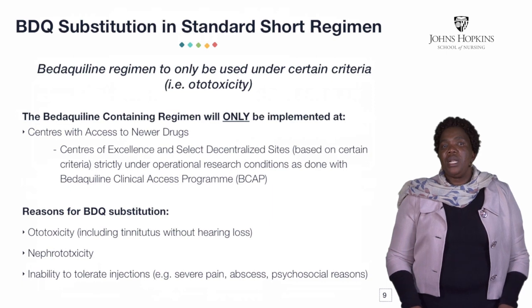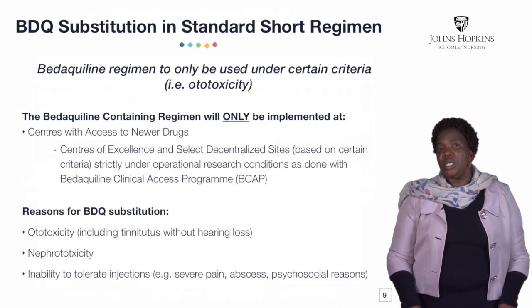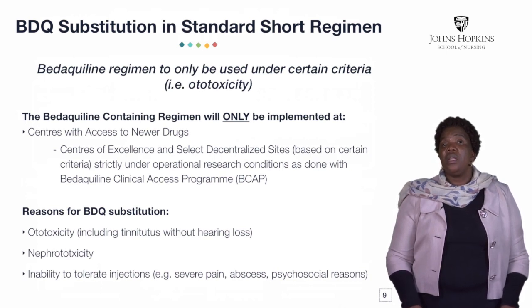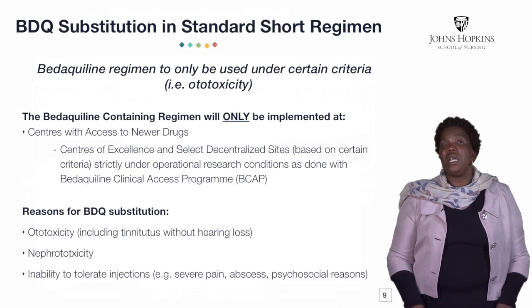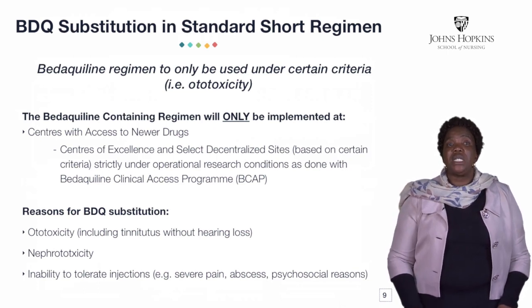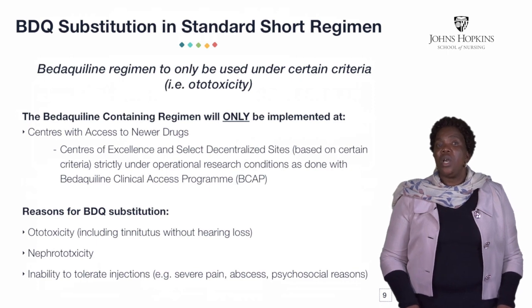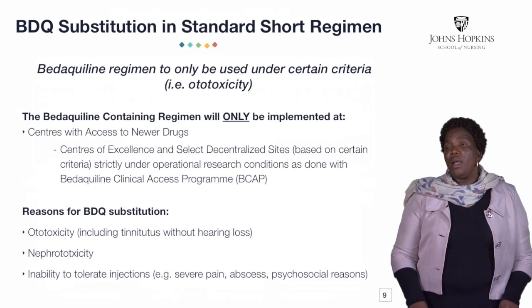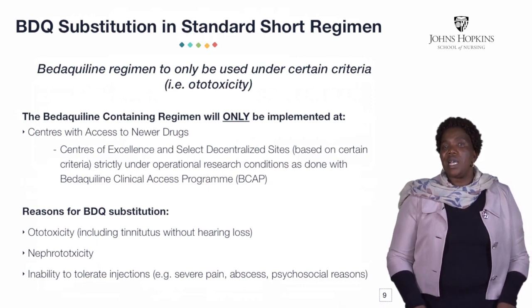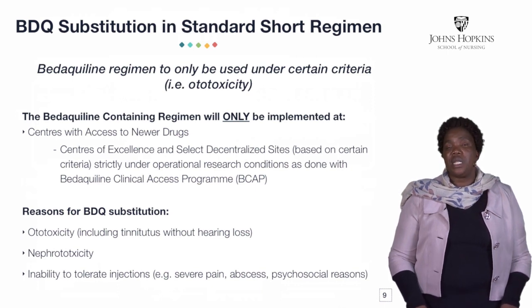What we must understand about bedaquiline: the bedaquiline regimen is only for those patients who are facing challenges or having problems during initiation of treatment. For example, if the patient is having ototoxicity at the beginning of treatment, this patient will be started on bedaquiline. Or if along the line you started kanamycin and the patient started having nephrotoxicity or ototoxicity, this patient is going to be substituted with bedaquiline. This bedaquiline-containing regimen will only be implemented at centers with access to the newer drugs, meaning most decentralized sites won't have these drugs, but centers of excellence do.